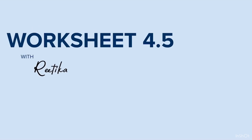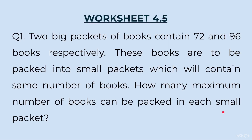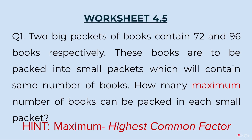Now we are ready to do Worksheet 4.5. Question 1: Two big packets of books contain 72 and 96 books respectively. These books are to be packed into small packets containing the same number of books. How many maximum number of books can be packed in each small packet? Concentrate on the word 'maximum' — whenever maximum appears, we have to find the Highest Common Factor.